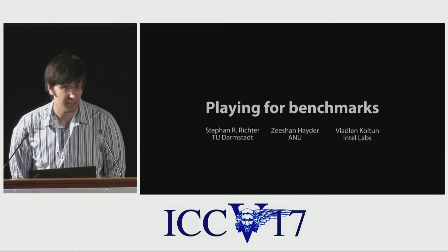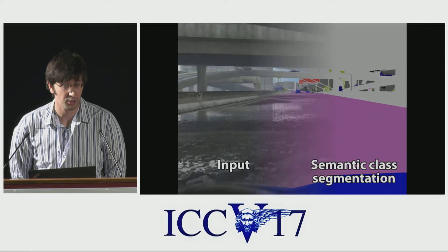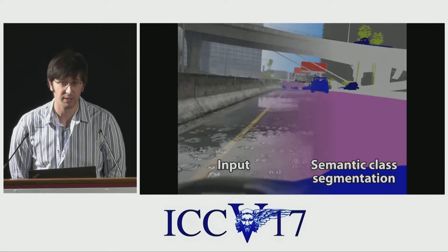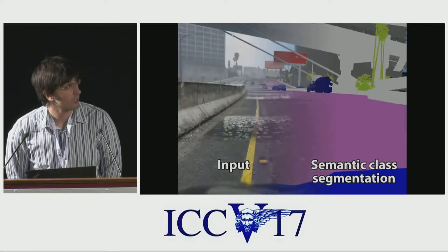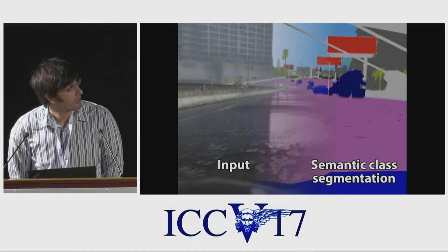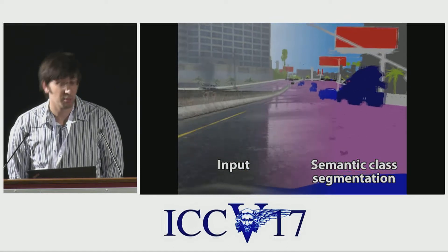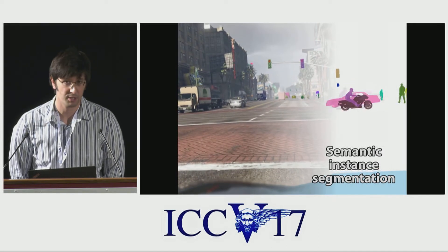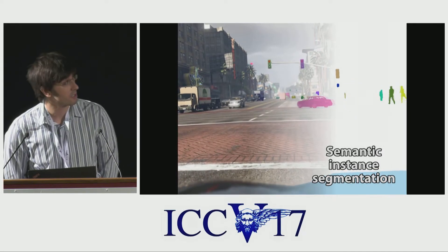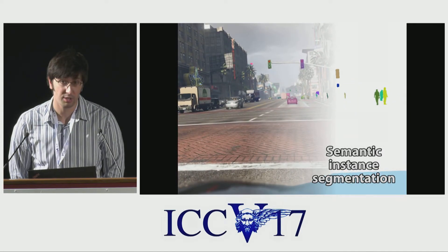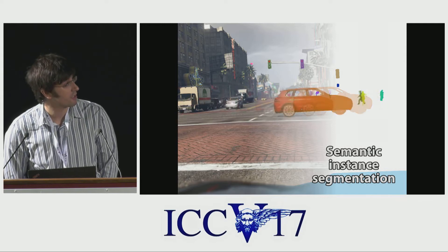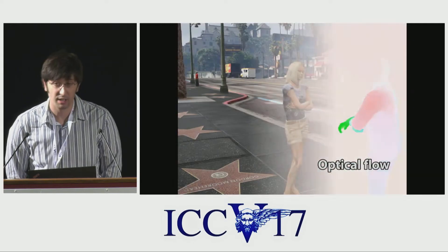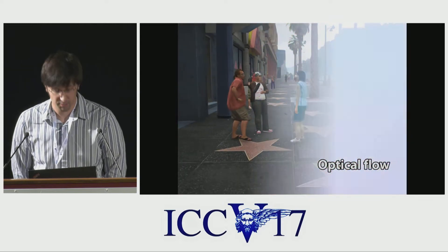Playing for Benchmarks is a benchmark suite for visual perception. It contains over 250,000 frames recorded at 15 frames per second, and each frame is annotated densely with ground truth for multiple visual perception tasks, such as semantic segmentation, semantic instance segmentation, optical flow, 3D scene layout, and visual odometry.